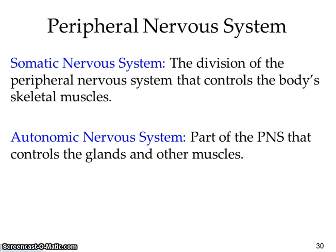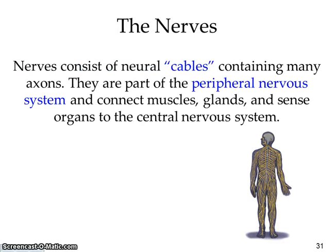When we look at the peripheral nervous system (PNS), we look at the somatic and the autonomic nervous system. Somatic is the division of the peripheral nervous system that controls the body's skeletal muscles — SS, somatic skeletals, easiest way to remember. Autonomic sounds like automatic — it's the automatic nervous system, dealing with things you don't have to think about.